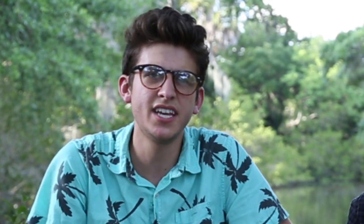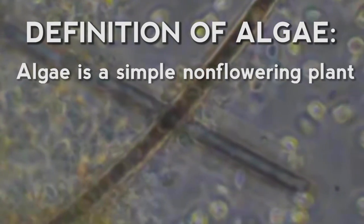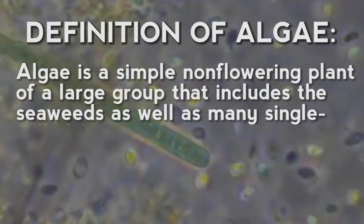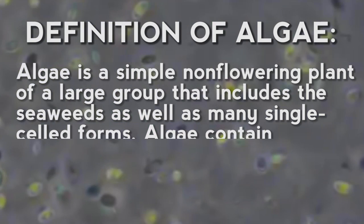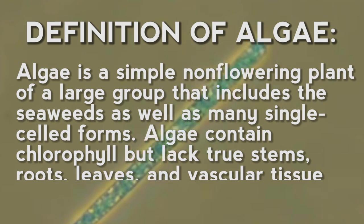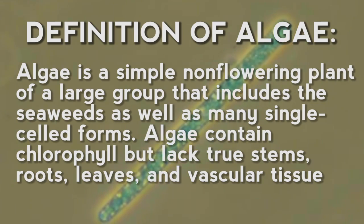As it turns out, all the different types of algae are so diverse that the scientific community still can't agree on an official definition of algae. But for today's purposes, algae is a simple non-flowering plant of a large group that includes seaweeds as well as many single-celled organisms. Algae contains chlorophyll but lacks true stems, roots, leaves, and vascular tissues of other plants.